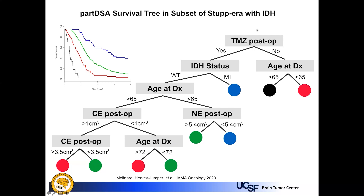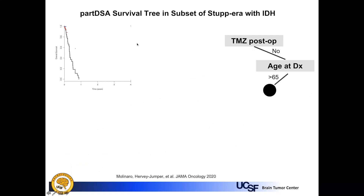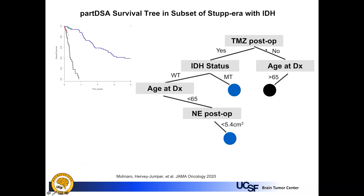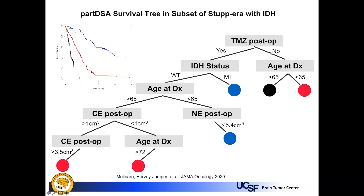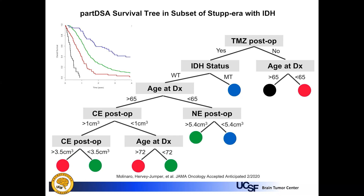This initial analysis focuses on patients in the temozolomide era with known IDH status. The poorest performers were patients who did not receive temozolomide and were older in age. The best performers were those who received temozolomide and were either IDH-mutated, or IDH wild-type with younger age and less non-enhancing tumor volume. The middle groups included those not receiving temozolomide under age 65, or temozolomide-treated IDH wild-type patients over age 65 with more residual enhancing and non-enhancing tumor volume.